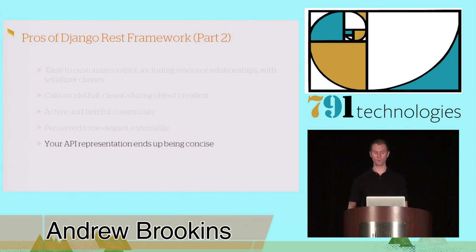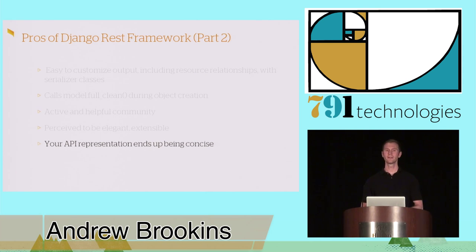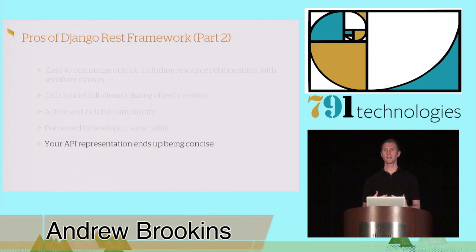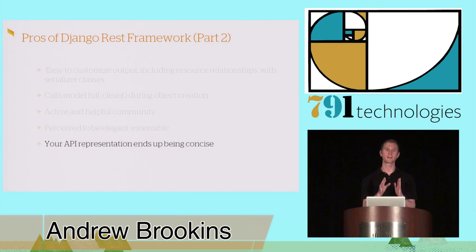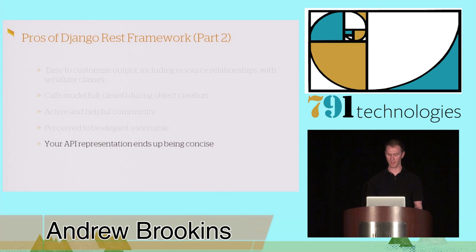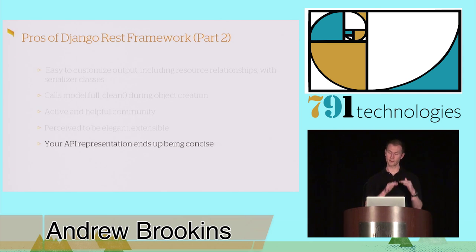Your API representation ends up being pretty concise. Because it's a bunch of composed objects, it is concise in the sense that the high-level view looks small, and then you go down and look at the individual composed classes — the filter or whatever — and expand out into multiple classes. It's nice to have a concise overview at the top level of the class hierarchy.